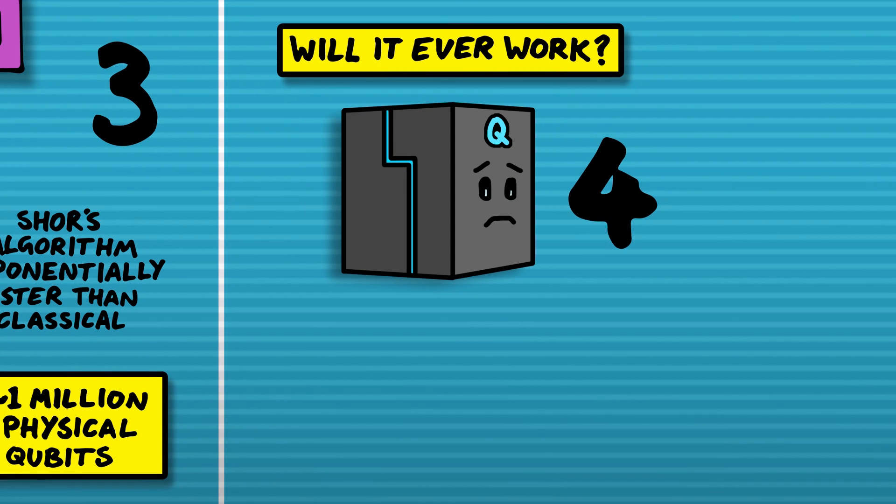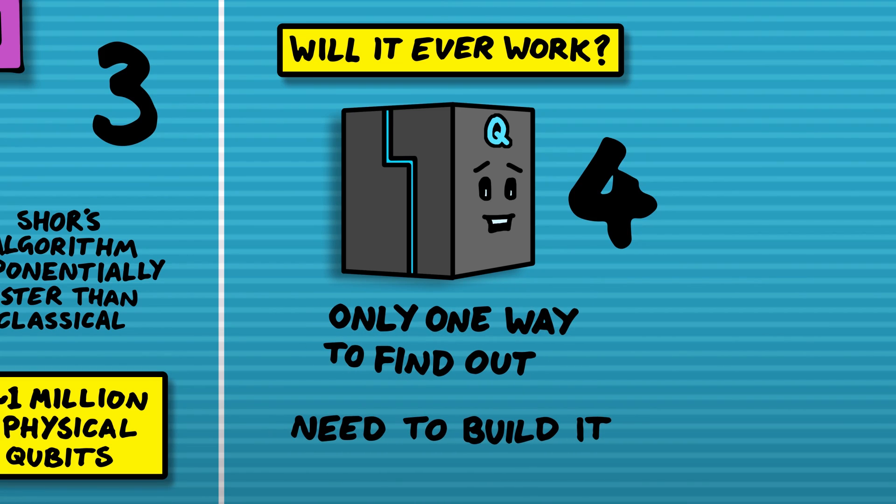Point number four: nobody knows for sure that quantum computing will ever work at scale. Some people argue that noise is such a significant issue that it will be impossible to get a million qubits all working together without noise ruining everything. It's a fair point. Personally, I'm optimistic — human ingenuity can go a very long way. Some people said we would never detect gravitational waves on Earth because noise was too significant an issue, and yet the people at LIGO did an incredible job over many years and now we can detect gravitational waves on Earth, which is an amazing achievement. It's not exactly equivalent to quantum computing, but the only way we can find out whether we can do it is by trying. I'm optimistic, but it's always worth bearing in mind that it's not guaranteed.